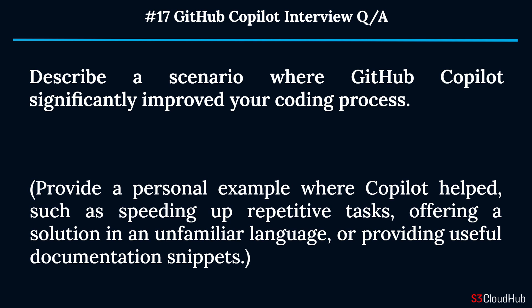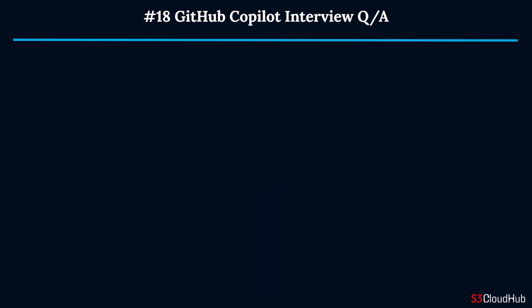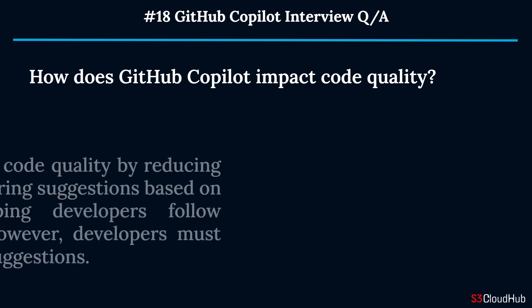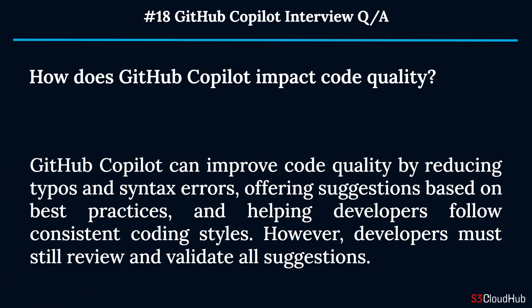Question seventeen: Describe a scenario where GitHub Copilot significantly improved your coding process. Provide a personal example where Copilot helped, such as speeding up repetitive tasks, offering a solution in an unfamiliar language, or providing useful documentation snippets.